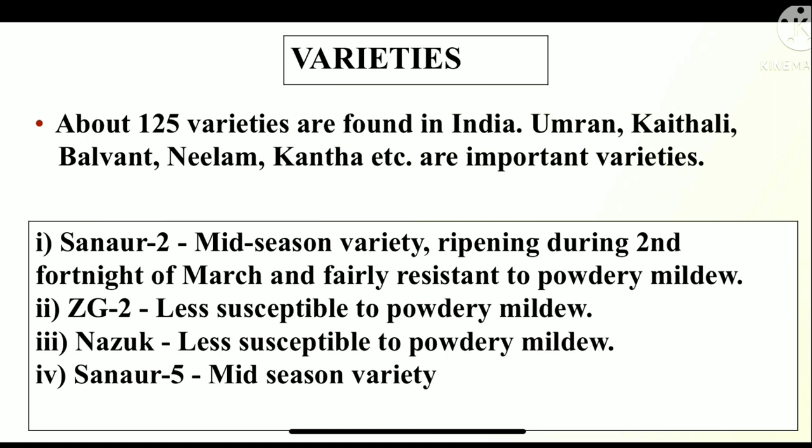Let's discuss about varieties. About 125 varieties are found in India. Umran, Cathali, Balwan, Neelam, Kantha, etc. are important varieties. Here are some varieties given below which are resistant to a disease known as powdery mildew.